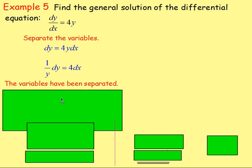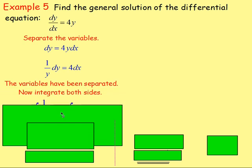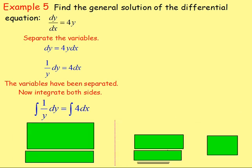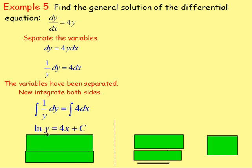You integrate both sides. So we're integrating 1 over y with respect to y, and we're integrating 4 with respect to x. If we integrate 1 over y, it goes to ln y. And if you integrate 4 with respect to x, it goes to 4x. Remember, you'll have constants on one side and on the other, but really you would just move them all to one side, and you would just have a plus c on your right-hand side.